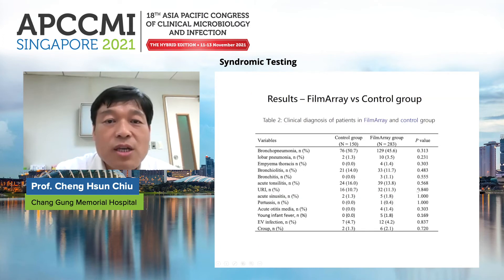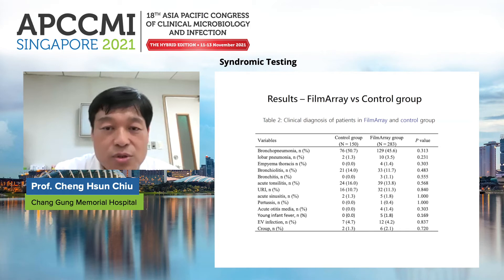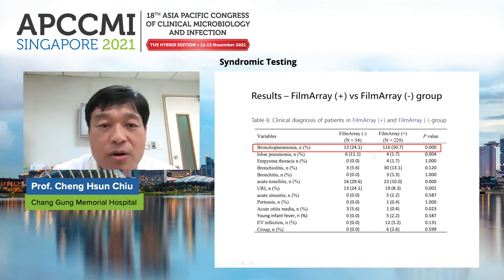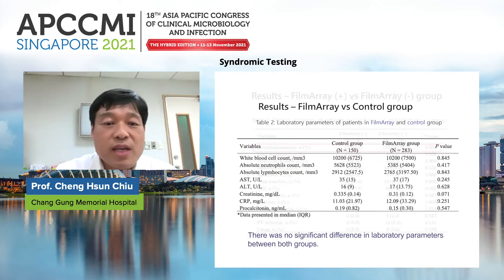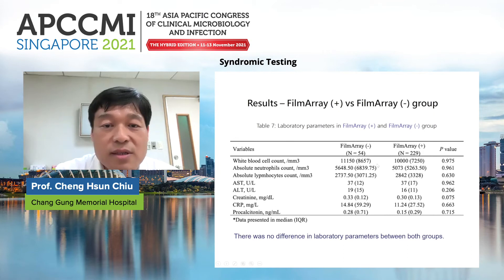Regarding clinical diagnosis, there was no difference between the FilmArray group and control group. However, comparing FilmArray-positive and FilmArray-negative groups, more bronchopneumonia was observed in the FilmArray-positive group. There was no difference in laboratory findings between the FilmArray and control groups, nor between FilmArray-negative and FilmArray-positive groups.